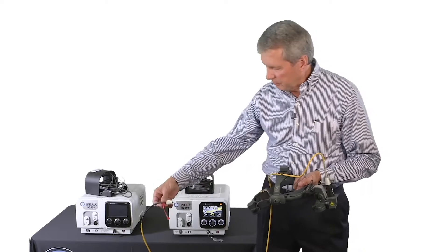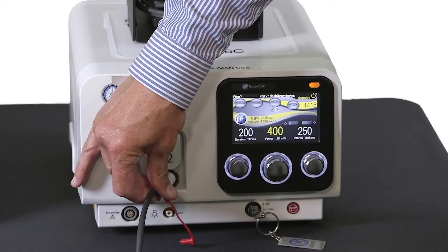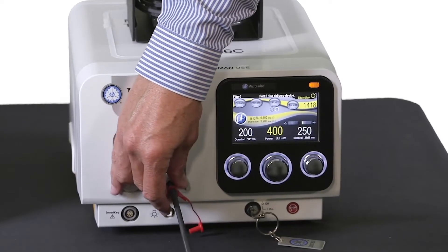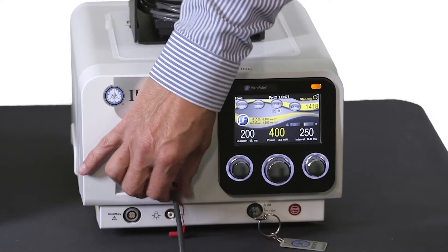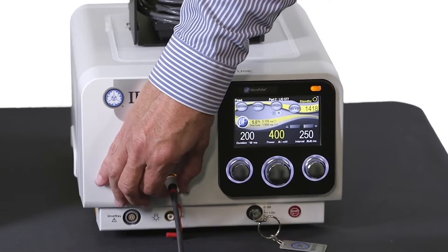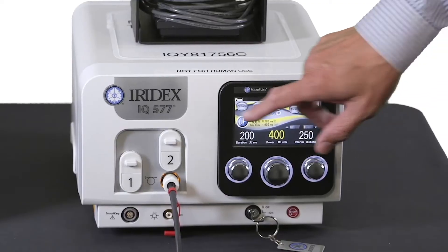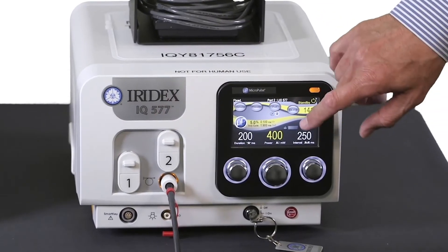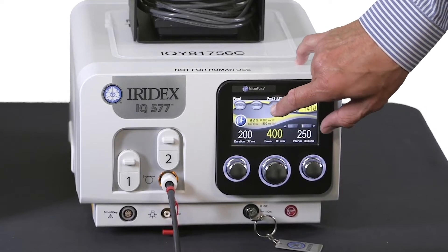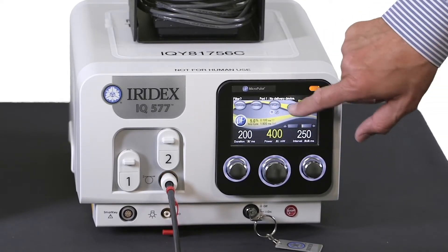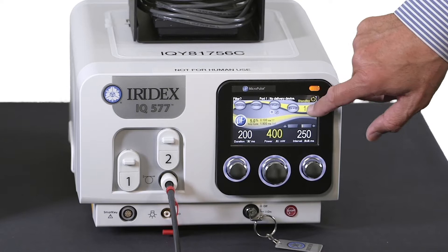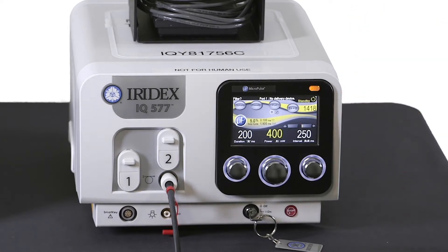Line up the fiber in the middle of the port. Push in, thread it on, and when you feel resistance, stop. At that point, the laser should recognize the indirect. If it's only recognizing port number one, you can touch the port button on top of the screen, and it'll go to port number two, and it should recognize the laser indirect ophthalmoscope at that point.